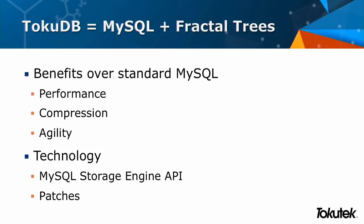We've productized this over the years. The fractal tree was invented and created around 2005-2006. We spent between 2009 and 2013 implementing it in MySQL as a storage engine — we call that product TokuDB. It's got some pretty significant benefits over stock MySQL, and here we're going to talk about InnoDB, not MyISAM. The benefits are: performance for greater-than-memory workloads — InnoDB is fantastic as an in-memory data store — really high compression, and agility through online schema changes. MySQL has always had a storage engine API, so we've implemented under that, but we've also done significant patching to take advantage of our functionality.